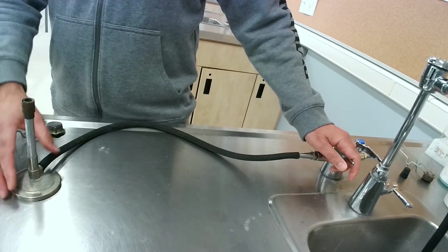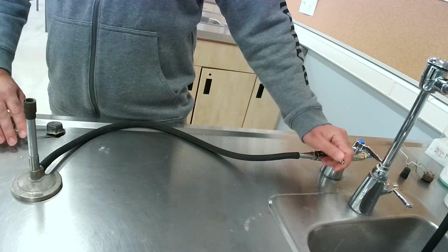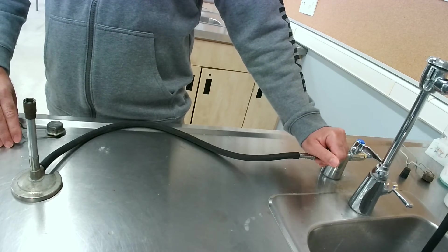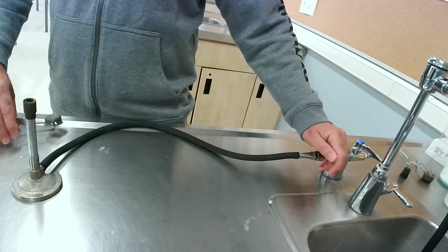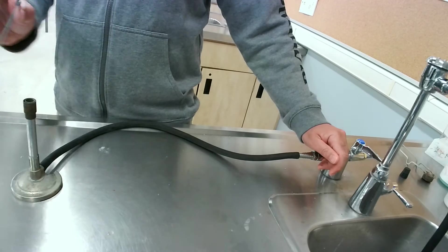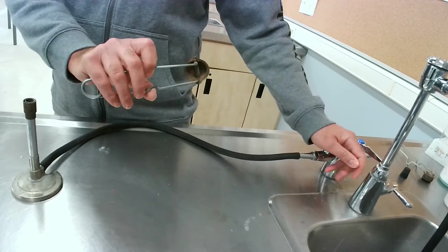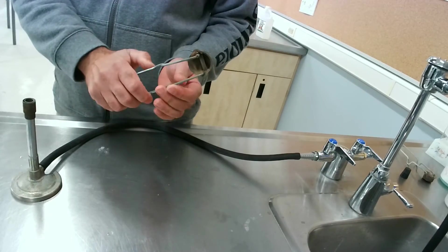We're going to start the Bunsen burner now by opening the valve, not all the way, about halfway. Then we're going to use the sparker, the flint, to generate a spark which will hopefully ignite the gas.